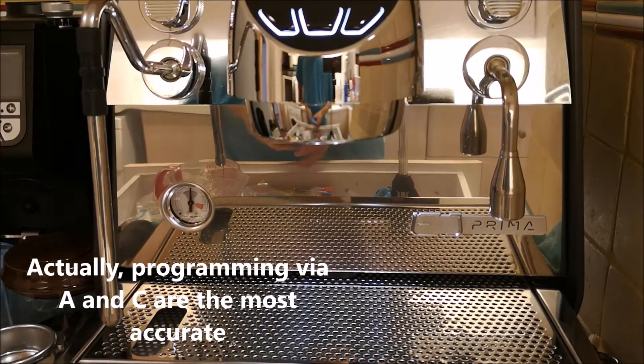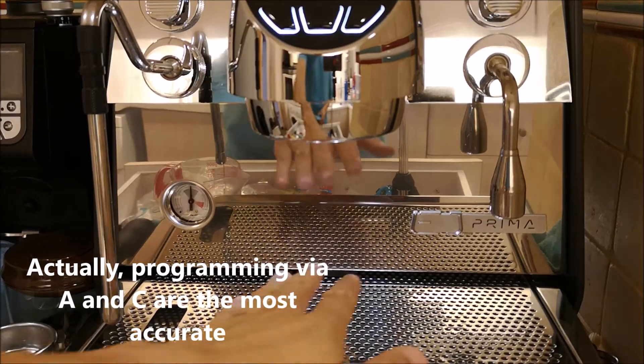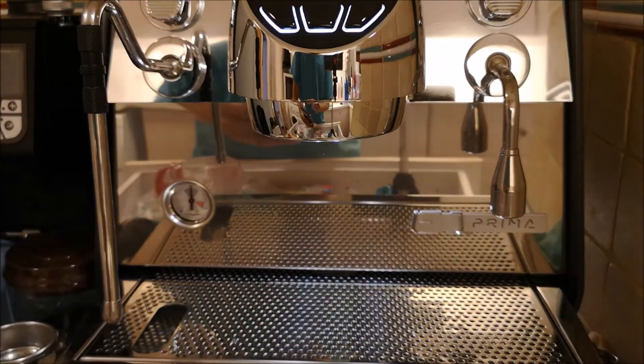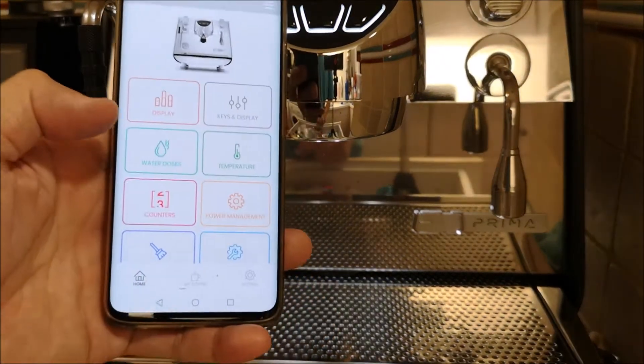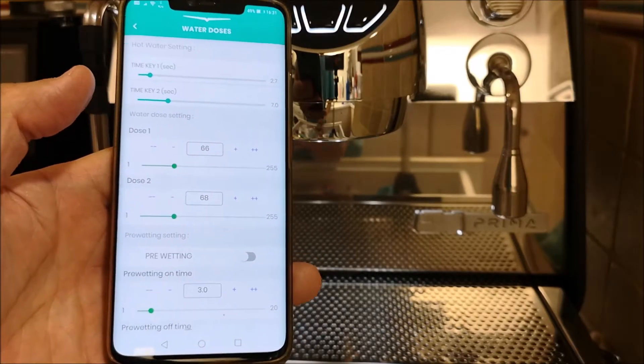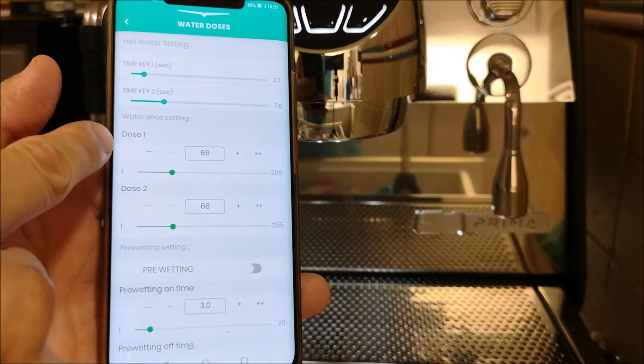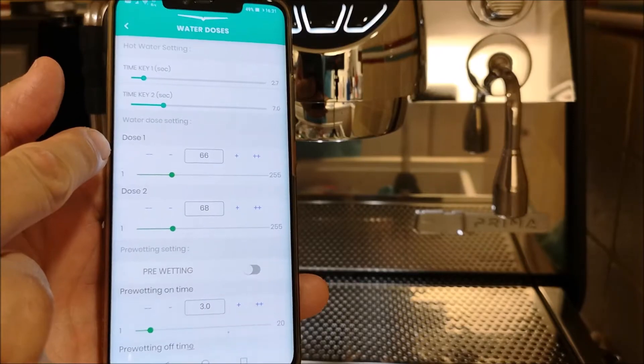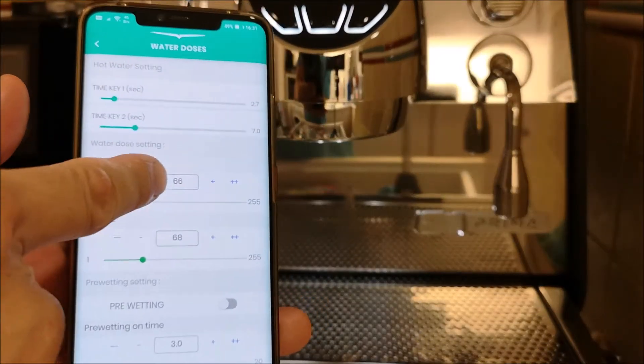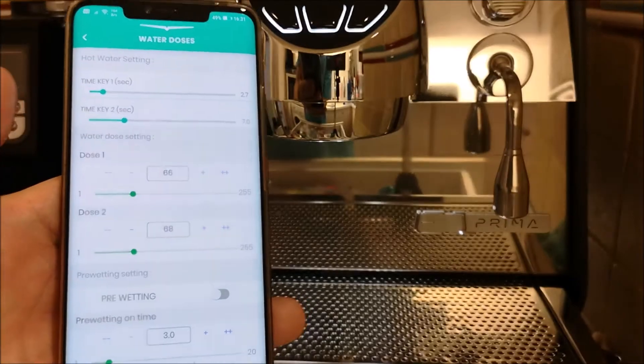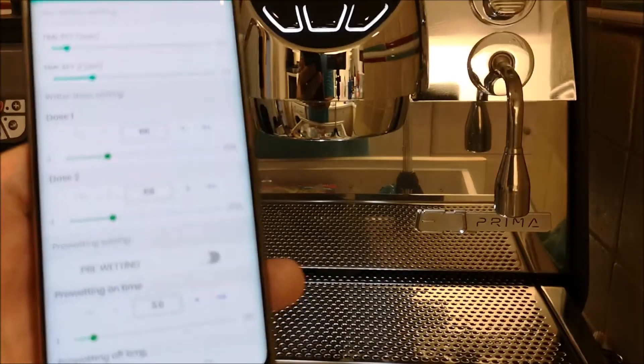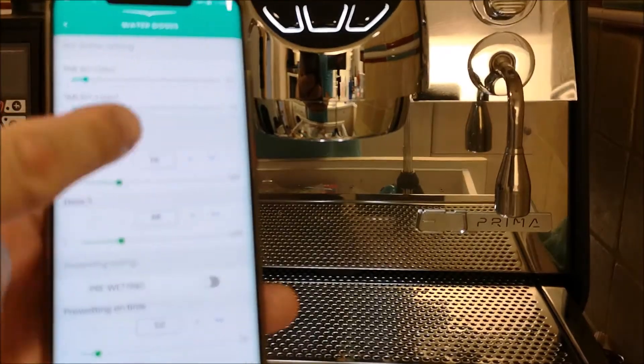This one will probably be the more accurate one for you since you're using a scale. To get into your dosing, it's the water dose. Make sure it's connected. I've set my dose one already using the buttons here and it's giving me 66 milliliters of water for 36 grams of espresso.